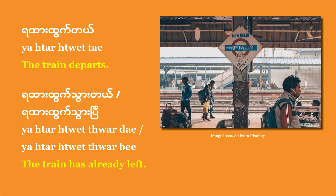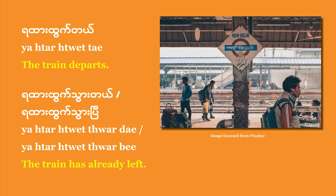Here's another example. Yata twet de means 'the train departs' or 'the train leaves.' Yata means train; twet de is the verb meaning to depart or to leave. But if the train has already left and you're standing alone on an empty platform watching the train move away from you, you should say yata twet thwade, or yata twet thwabi. Both are interchangeable, but it's more common to say yata twet thwabi, meaning the train has already left — emphasizing the aftermath.